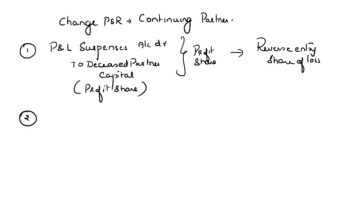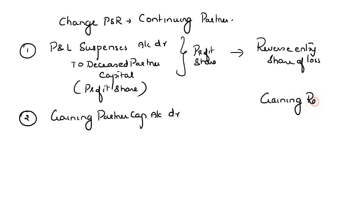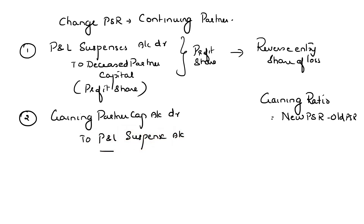Thereafter, one more entry would be passed, where we debit the gaining partner's capital account. Because as this particular deceased partner has left the business, the other partners are going to gain that profit share in some ratio. We prepare a working note to find out the gaining ratio — that would be new profit share minus old profit share. With this we know how much is gained by the continuing partners. Using that, we pass an entry of debiting the gaining partners and crediting the profit and loss suspense account with the amount of profit share. If it was a loss, the reverse entry is passed.